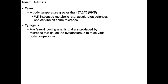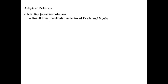A body temperature greater than 37.2°C or 99°F is technically a fever. This increases your metabolism, accelerates the defenses, and can inhibit some microbes that don't tolerate high temperatures. Pyrogens are fever-inducing agents produced by microbes that cause the hypothalamus to raise body temperature. Fevers can be beneficial — we don't want them excessively high, but a moderate fever helps inhibit pathogen growth.